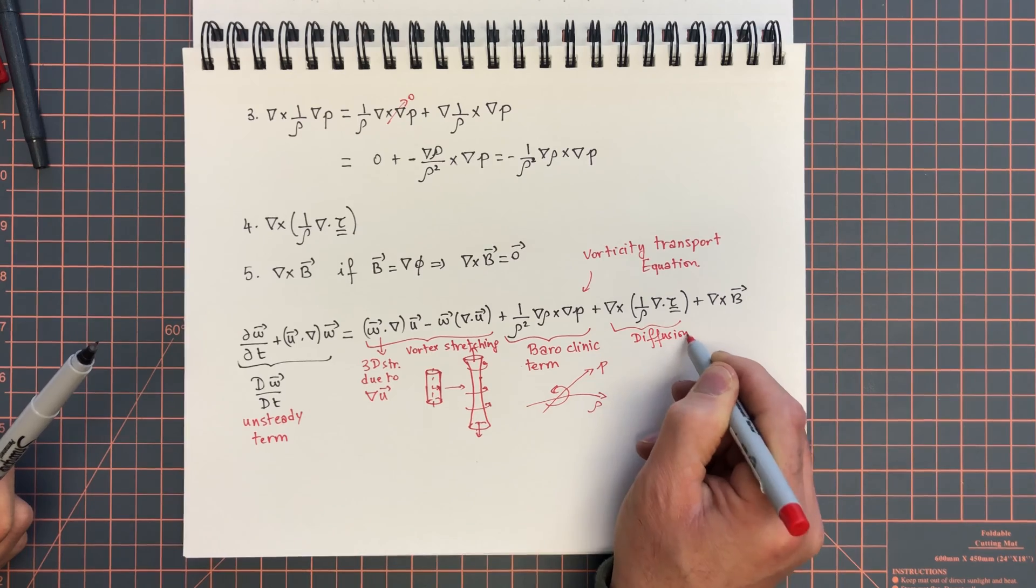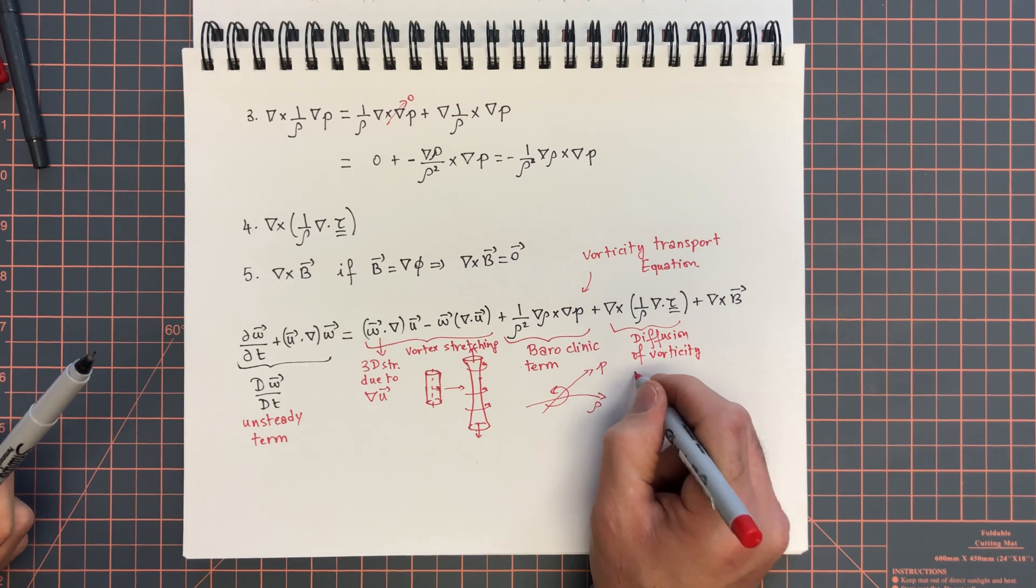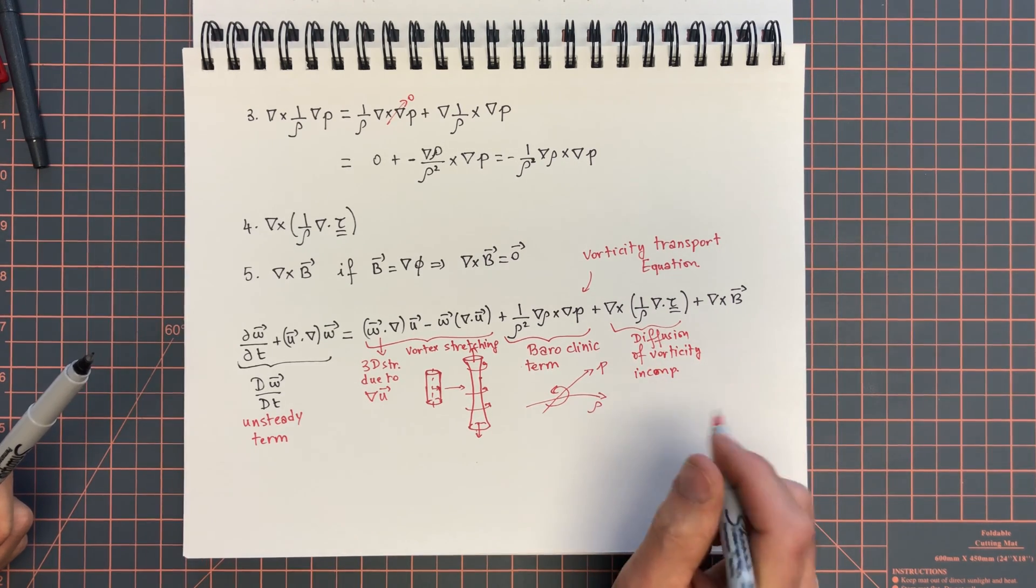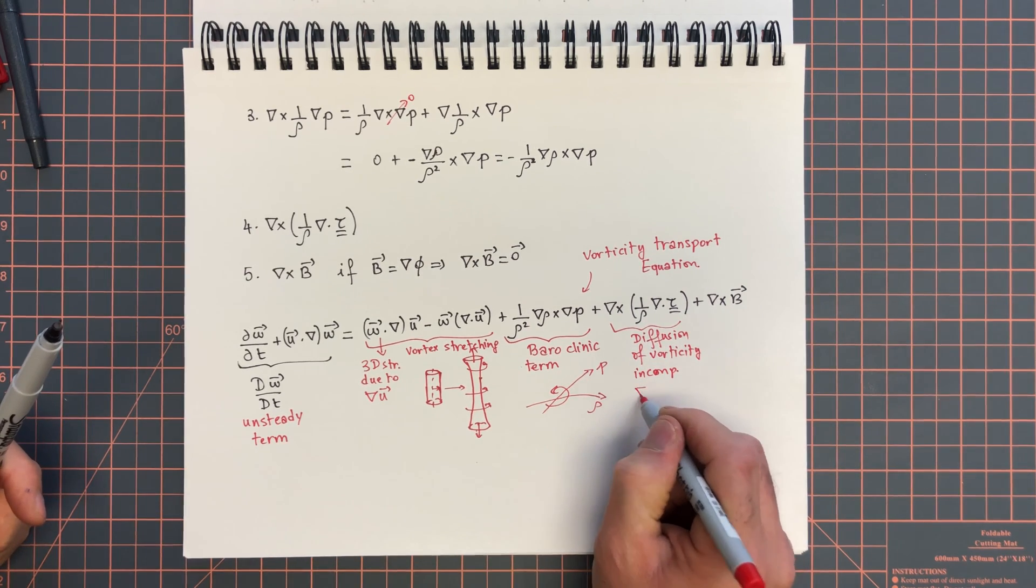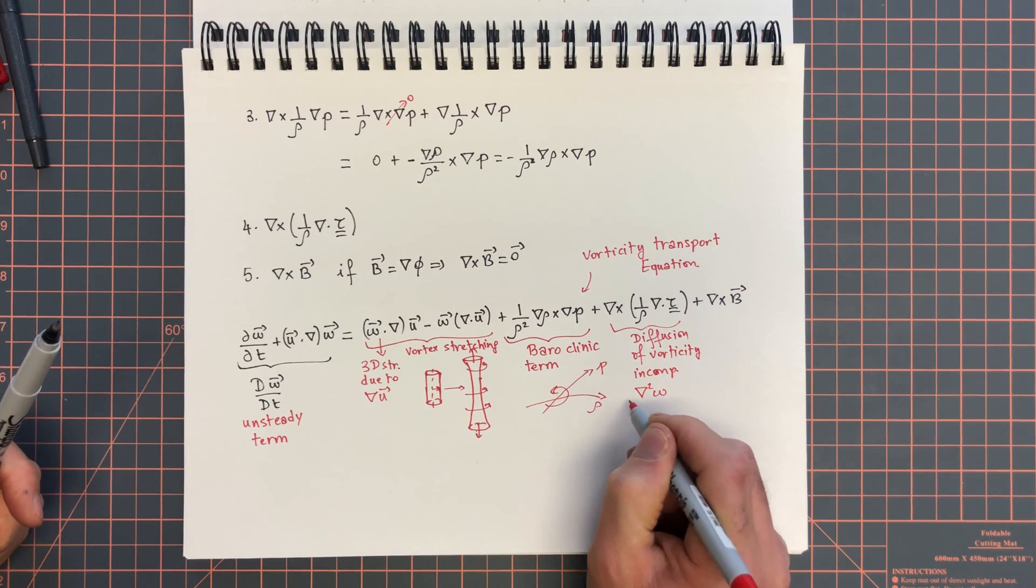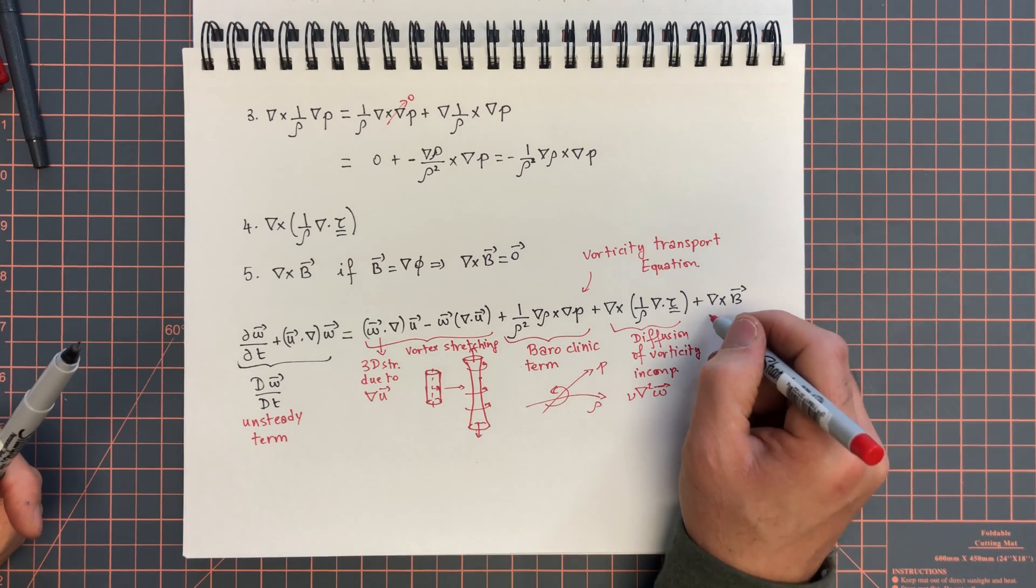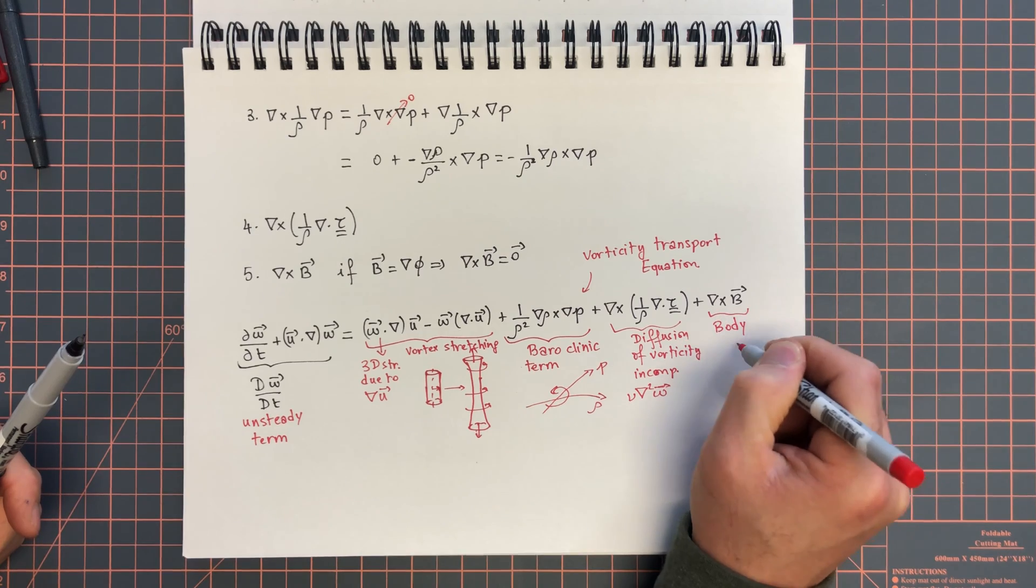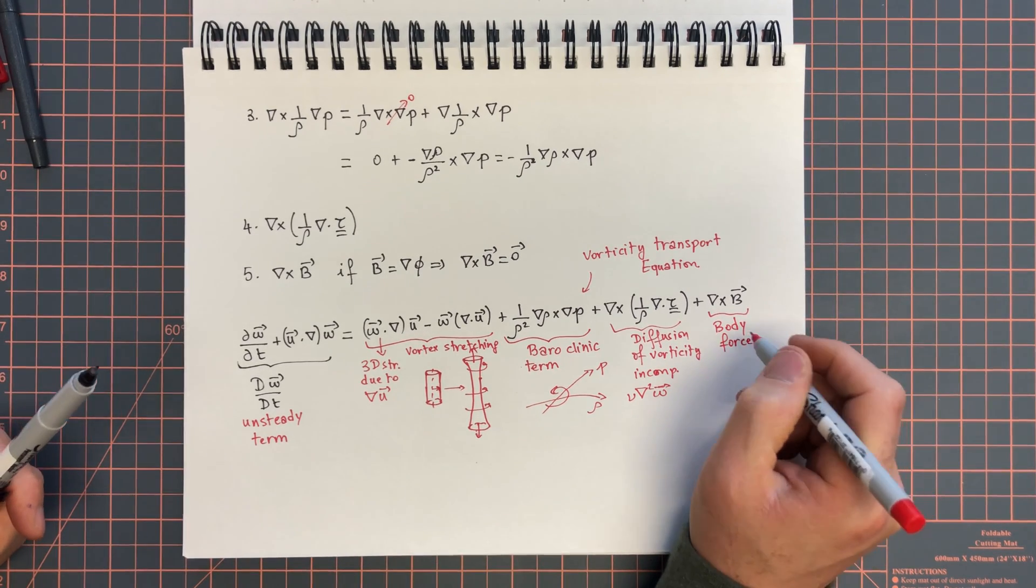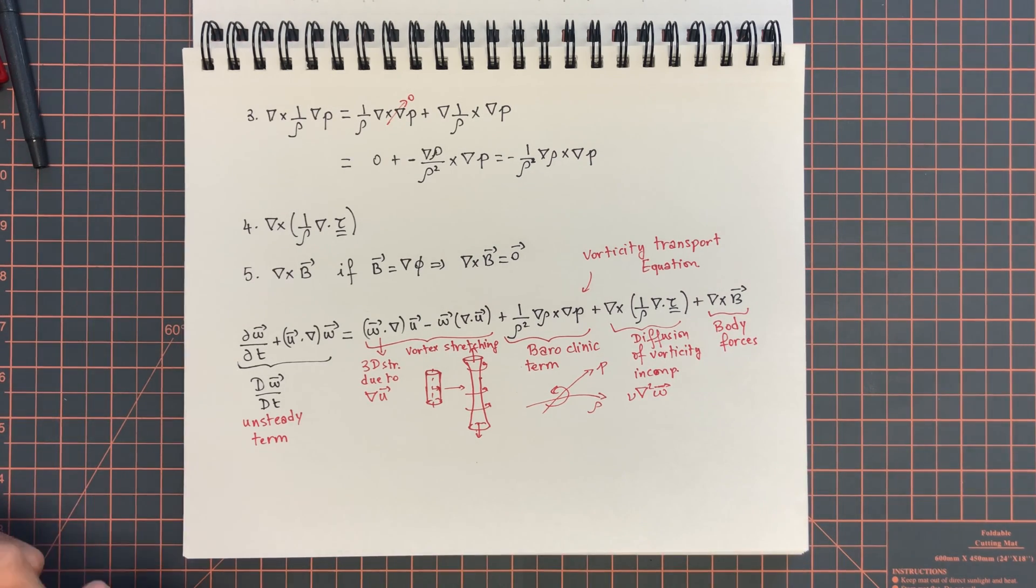So this is a diffusion term, diffusion of vorticity. For incompressible flows, constant density incompressible flows, this term reduces simply to nu del squared omega, and hence the nomenclature of diffusion of vorticity. And simply, this is the contribution of body forces. Body forces. If they're non-conservative, then you're going to get vortex generation as a source term in your vorticity transport equation.